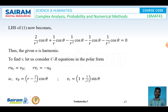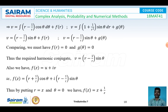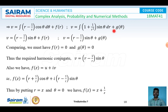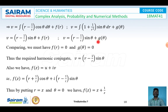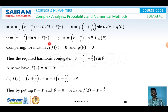Integrating v_θ = (r − 1/r)cos θ with respect to θ, treating r constant: v = (r − 1/r)sin θ + f(r). Integrating v_r = (1/r)(1 + 1/r²)sin θ with respect to r, treating θ constant: v = (r − 1/r)sin θ + g(θ). No term is free from θ in the first equation, so f(r) = 0; no term is free from r in the second, so g(θ) = 0.